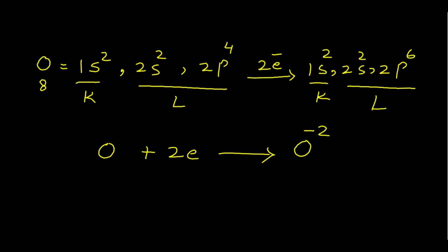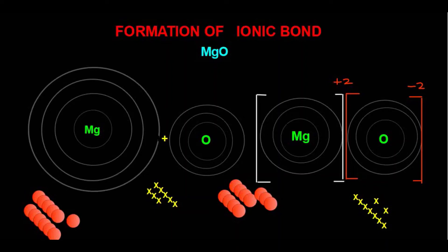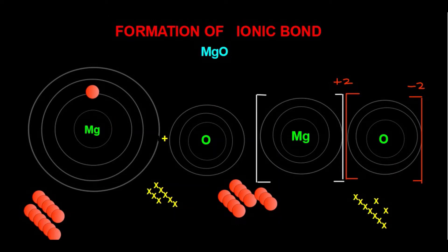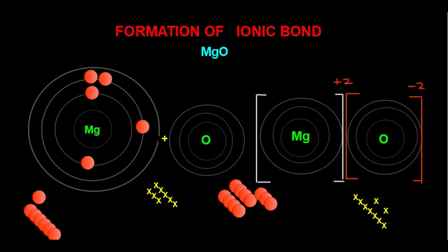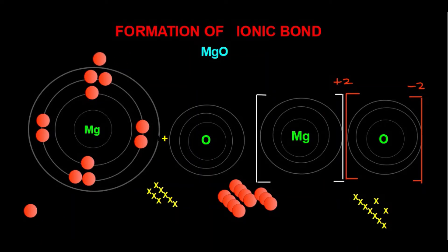Now we will draw the electron dot structure for the formation of magnesium oxide. For magnesium: in the K shell there are two electrons, in the L shell there are eight electrons, and in the M shell there are two electrons. For oxygen, using the cross-electron model: in the K shell of oxygen there are two electrons.